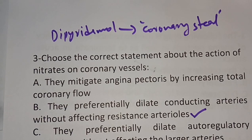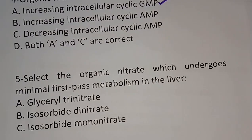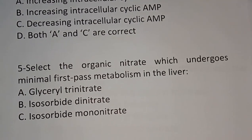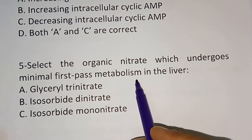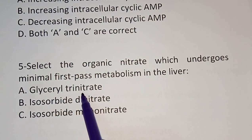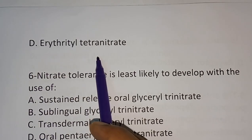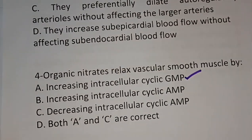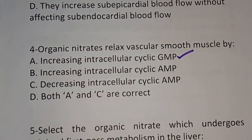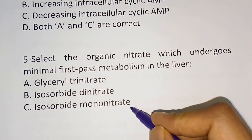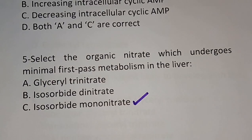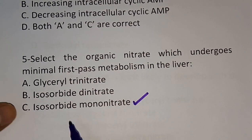Question five: select the organic nitrate which undergoes minimum first-pass metabolism in the liver. Options: A) glycerol trinitrate, B) isosorbide dinitrate, C) isosorbide mononitrate. The correct answer is option C — isosorbide mononitrate undergoes minimum first-pass metabolism.